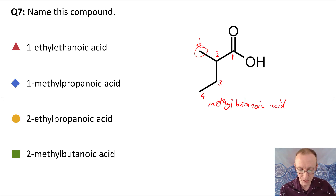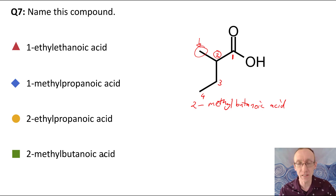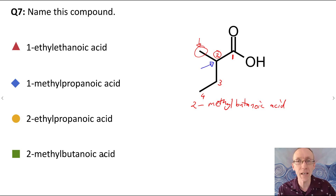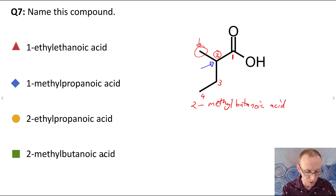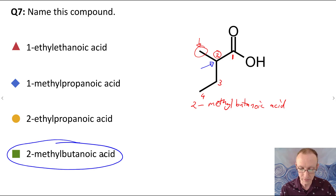The group that is attached is a one-carbon group, so it becomes methyl butanoic acid. The methyl group is attached at position two, so it's 2-methylbutanoic acid. The most common mistakes in naming this compound are starting to number at the carbon next door to the carboxylic acid, and forgetting to go along the longest chain. So the answer is 2-methylbutanoic acid.